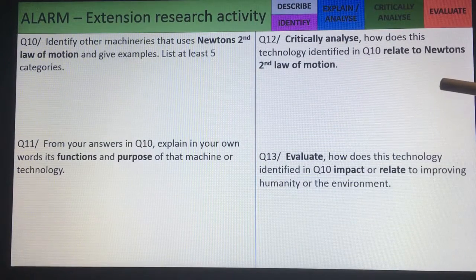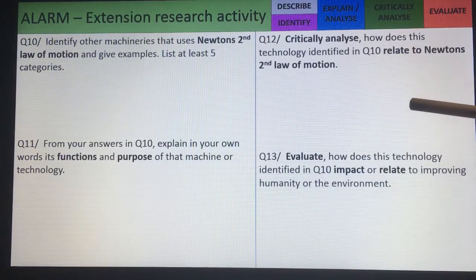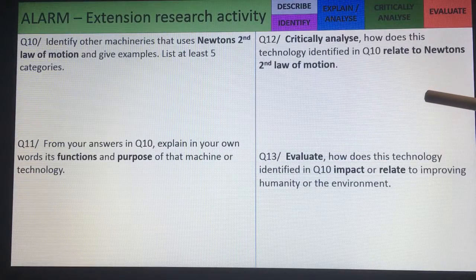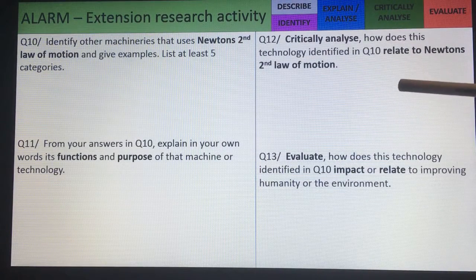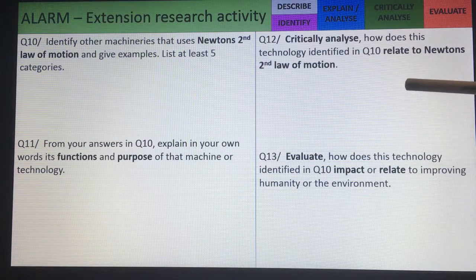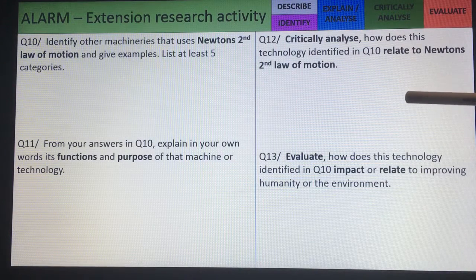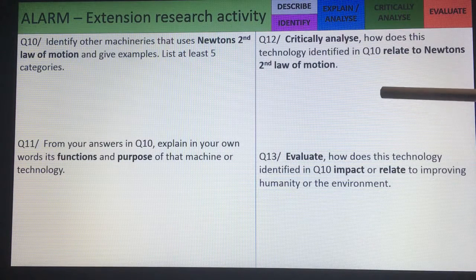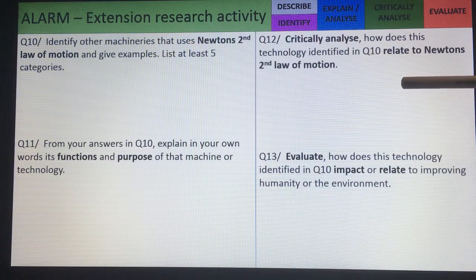Question number 12 is asking you to critically analyze how does this technology identify in question 10 related to Newton's second law of motion. Well, that involves using the formula F equals MA. So if the car is decelerating which means it's slowing down, F equals MA so M is the mass of the car, A is the deceleration factor. F is the force required to bring the car down to rest. So that's one example.